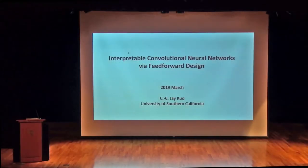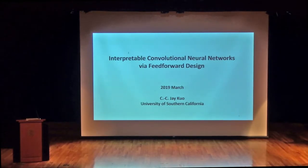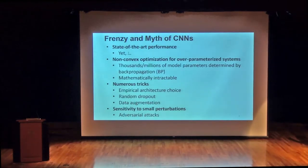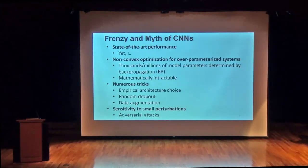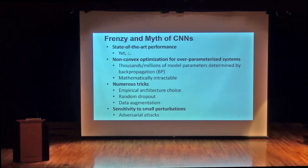We are talking about interpretable convolutional neural nets, trying to explain what's going on inside them. There is a certain philosophy about how to do it. People now use two kinds of neural nets: convolutional neural nets and recurrent neural nets. Here I focus on convolutional neural nets, particularly those more relevant to image and media processing.